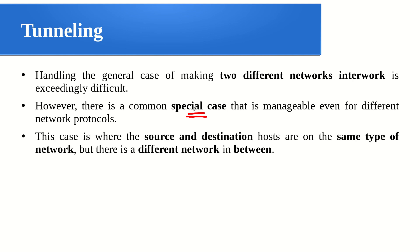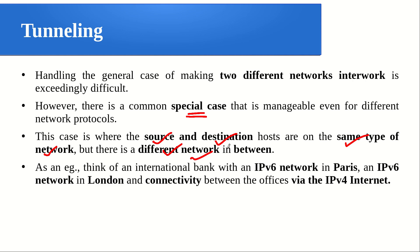This special case is where the source and destination hosts are all the same type — that is the requirement. In general networking you can't expect this, but if your inter-networking is such that both source and destination are on the same network, even though in between there can be any number of different networks, then we can go for tunneling.